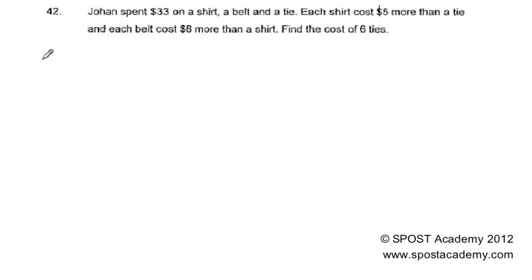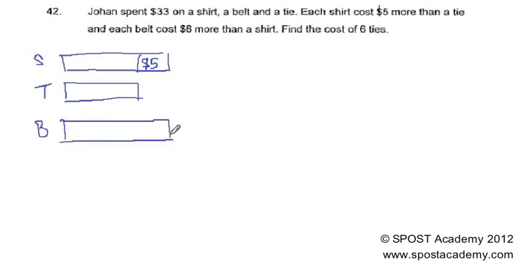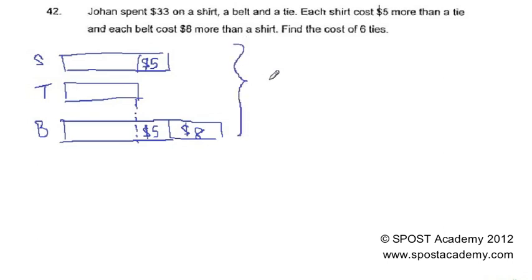Each shirt cost $5 more than a tie, so the shirt cost $5 more than a tie. And each belt cost $8 more than a shirt. So if we draw this out, this extra portion is $5. The total amount of a shirt, a belt, and a tie is equal to $33.